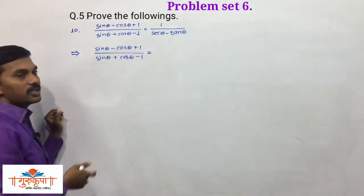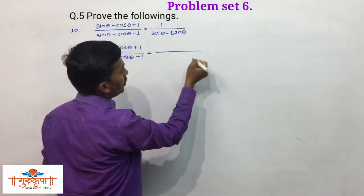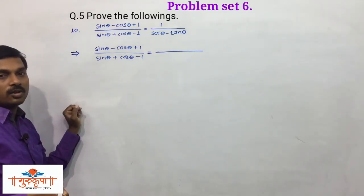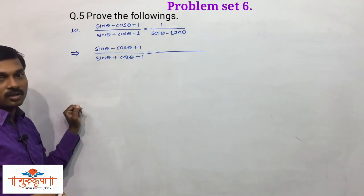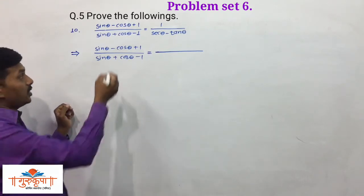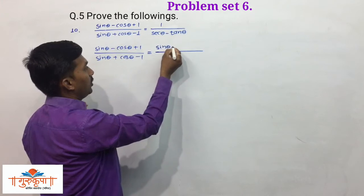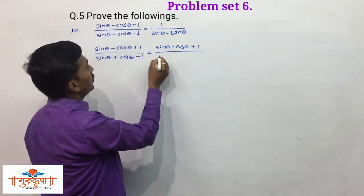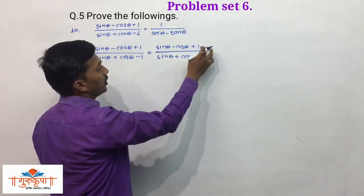We write the LHS as it is. Here, neither do we have to rationalize the numerator nor the denominator. The very important thing we have to do first is: sinθ - cosθ + 1 upon sinθ + cosθ - 1.